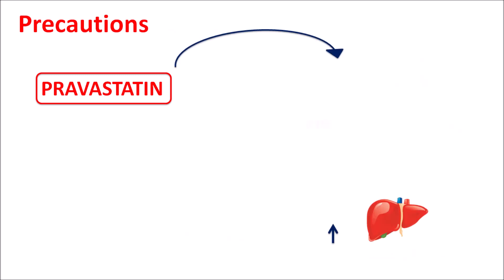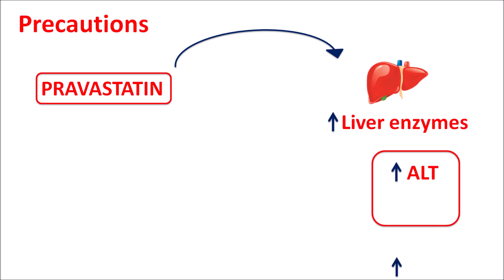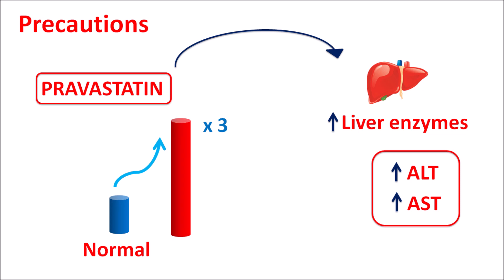Similarly, pravastatin can increase liver enzymes — specifically ALT (alanine transaminase) and AST (aspartate transaminase) levels. Pravastatin can increase liver enzymes up to three times normal levels, which indicates some degree of hepatic insufficiency. When liver enzymes are excessively increased beyond three times normal, this drug should be given carefully or reconsidered.